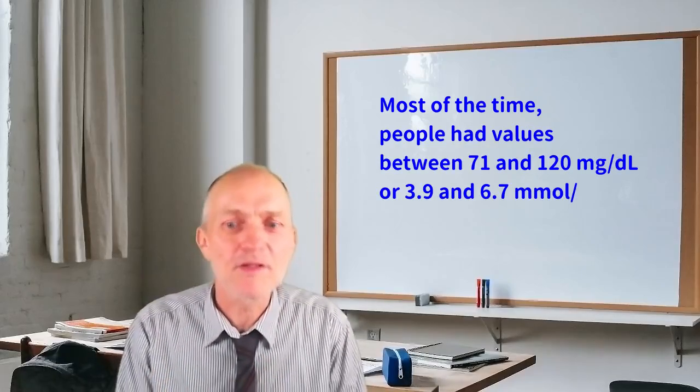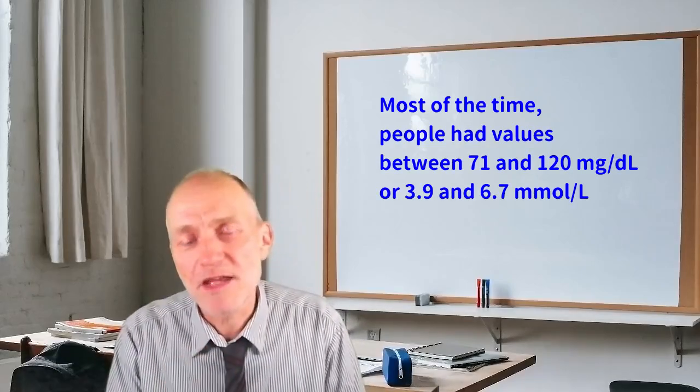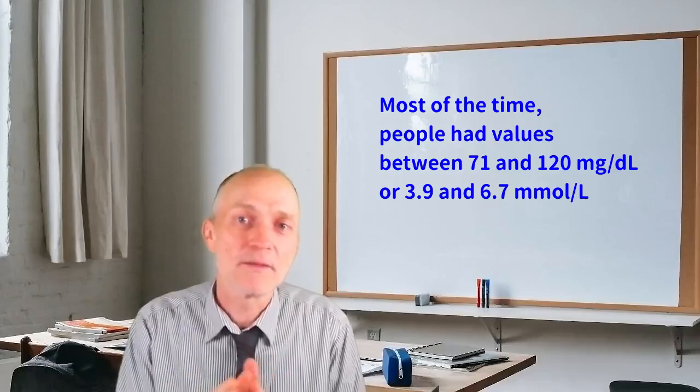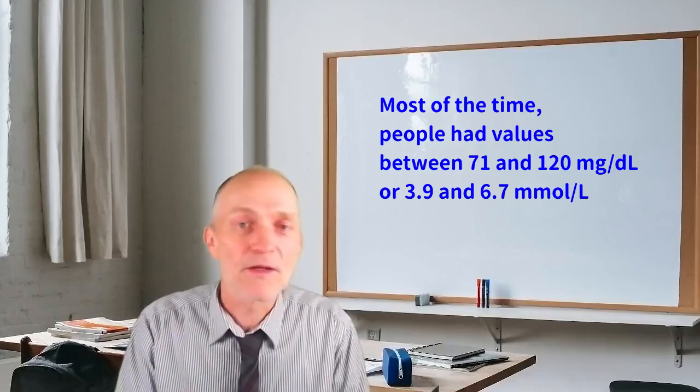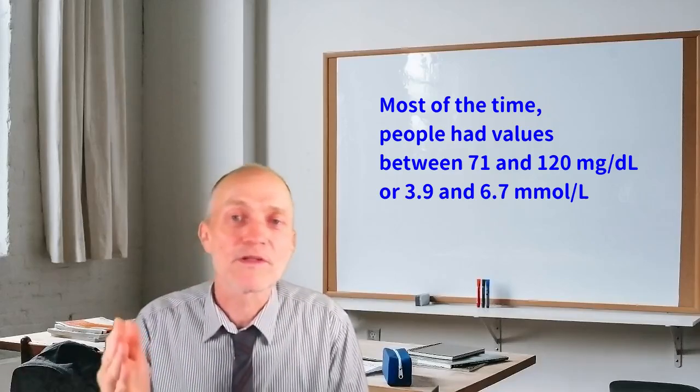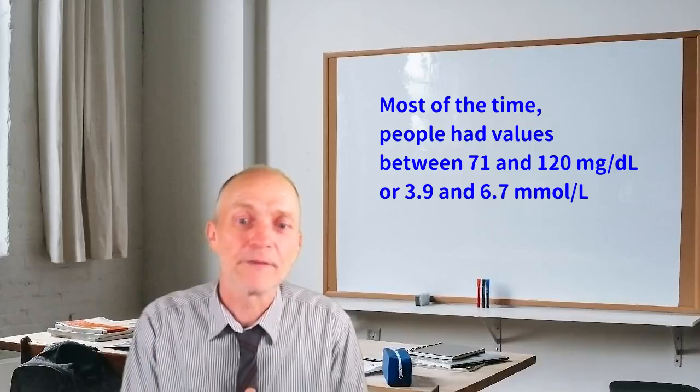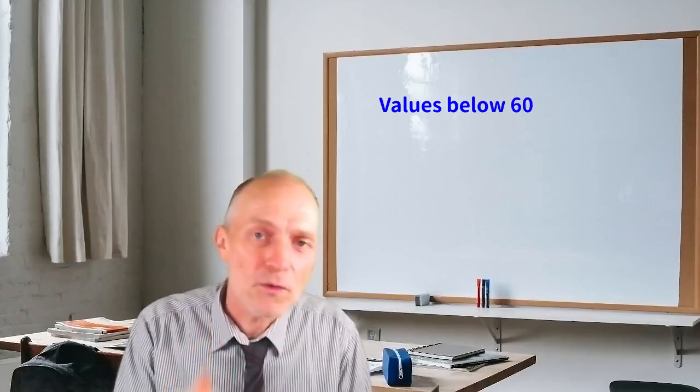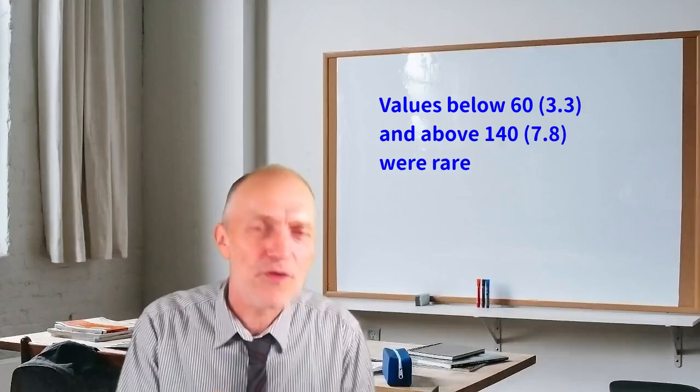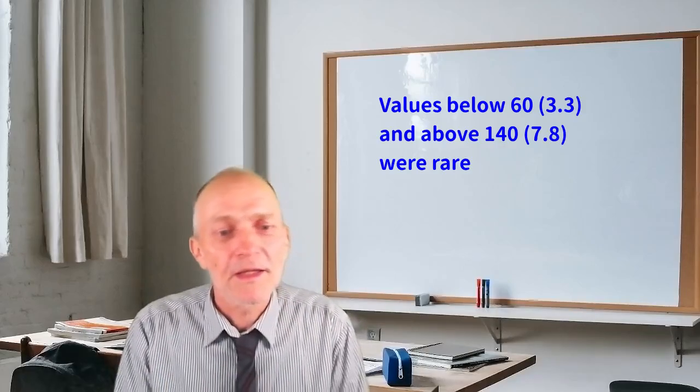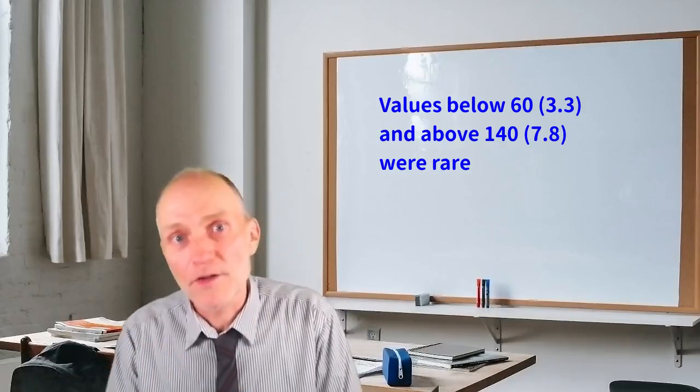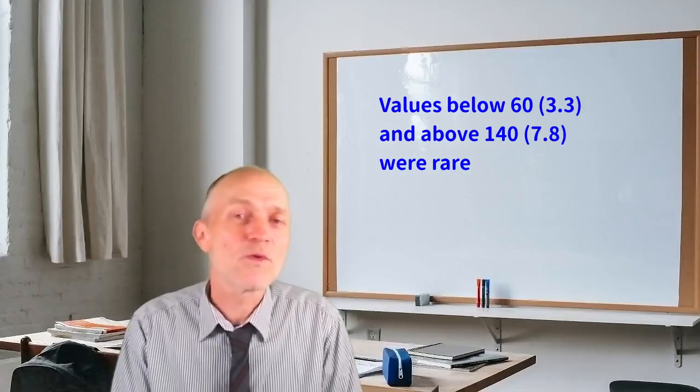It was found that 90% of the time, these people without diabetes had values between 70 and 120 mg per deciliter, or between 3.9 and 6.7 millimoles per liter. Values below 60, or below 3.3 millimoles per liter, and values above 140 or 7.8 were very rare.